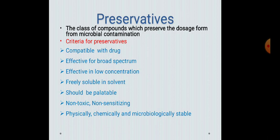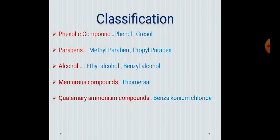The classification of preservatives includes: first, phenolic compounds — e.g. phenol, cresol; second, parabens — methylparaben, propylparaben; third, alcohols — ethyl alcohol, benzyl alcohol; fourth, mercuric compounds — thiomersal; and fifth, quaternary ammonium compounds — e.g. benzalkonium chloride. These five types of preservatives — phenolic compounds, parabens, alcohols, mercuric compounds, and quaternary ammonium compounds — are used as preservatives for emulsions.